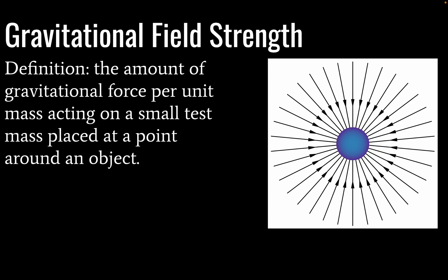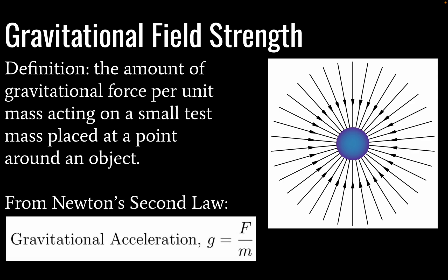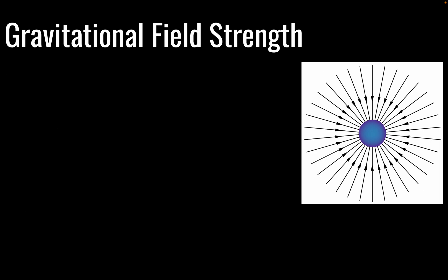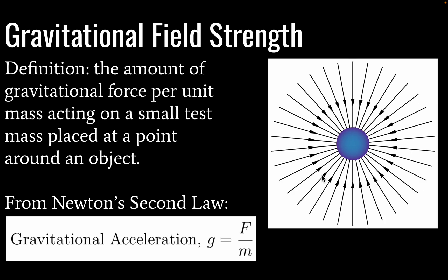Gravitational field strength is defined as the amount of gravitational force per unit mass acting on a small test mass placed at a point around an object. So according to Newton's second law, gravitational acceleration is equal to force divided by mass. Ideally, our test mass will be as small as possible.